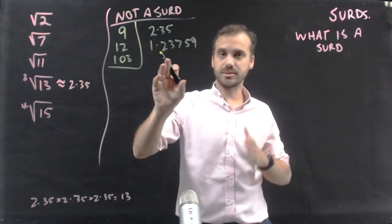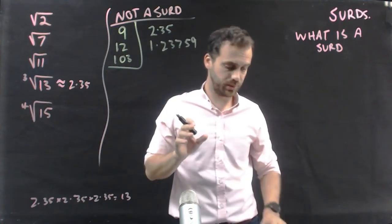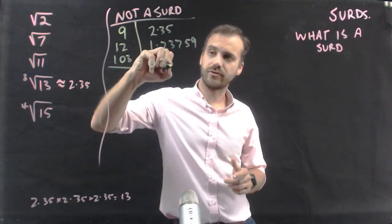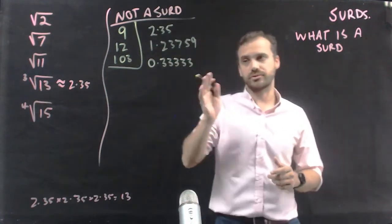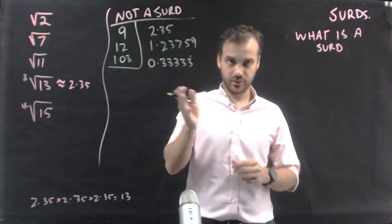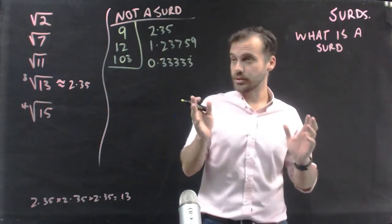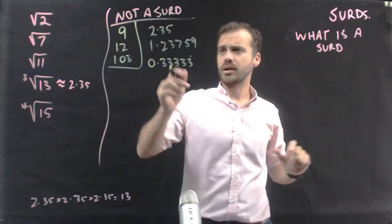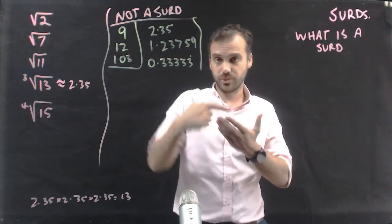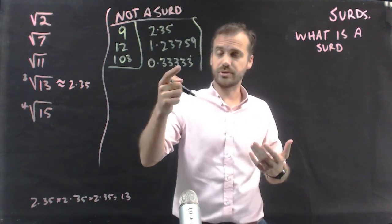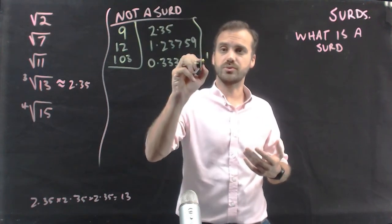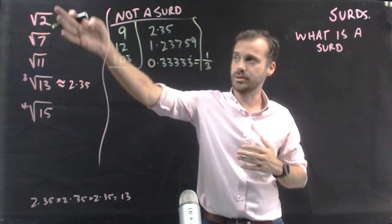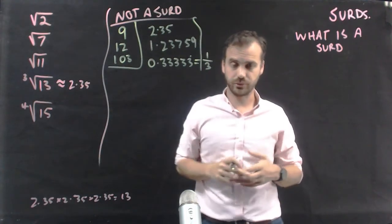Also, any decimal numbers that go on forever but are recurring — like 0.3333 recurring — that's not a surd because, even though it goes on forever, it's recurring and it can be expressed as a fraction. So 0.333... is just one third. You can't express any surds as a simple fraction — the only way to express them is with root signs.